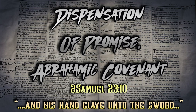The dispensation is the Dispensation of Promise, because of the promise God makes with Abraham. Hebrews 6:15 says, 'And so after he had patiently endured, he obtained the promise.' Hebrews 11:9 says, 'By faith he sojourned in the land of promise as in a strange country, dwelling in tabernacles with Isaac and Jacob, the heirs with him of the same promise.' That's why most people call it the Dispensation of Promise — because of the promise God makes with Abraham, Isaac, Jacob, and the 12 tribes. The steward is obviously Abraham.